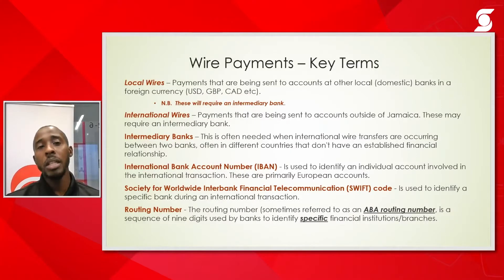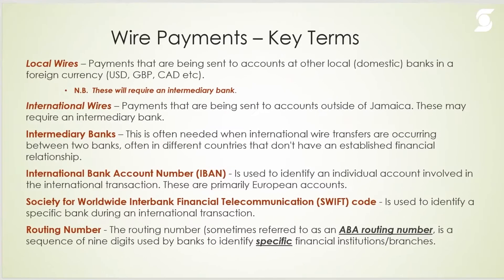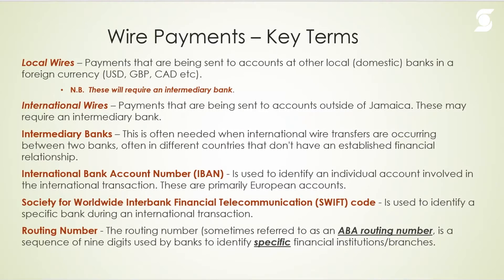Before we go into the platform, I would like to highlight key terms as they relate to wire payments. One of the main functions is to send local wires, which means you're able to send foreign currency payments to other accounts at local banks. You won't be able to send a USD or GBP payment to another bank via the RTGS or ACH network — it will have to be done via the wire payment option. Additionally, for all local wire payments it is mandatory for an intermediary bank to be on the payment.